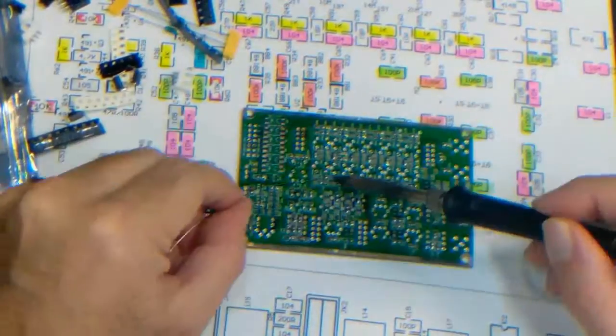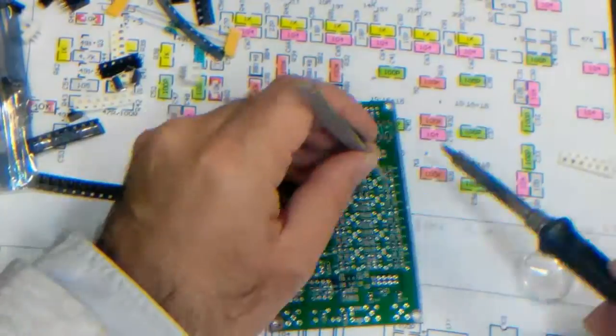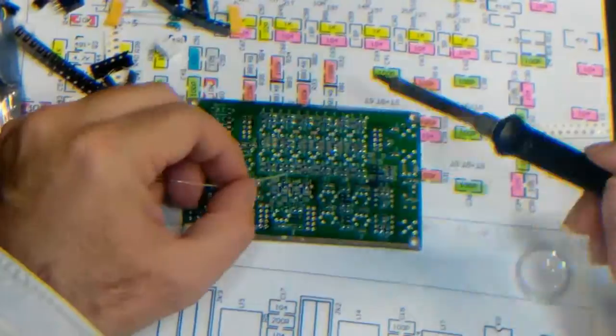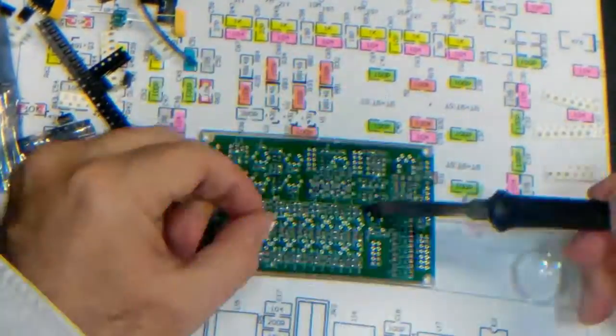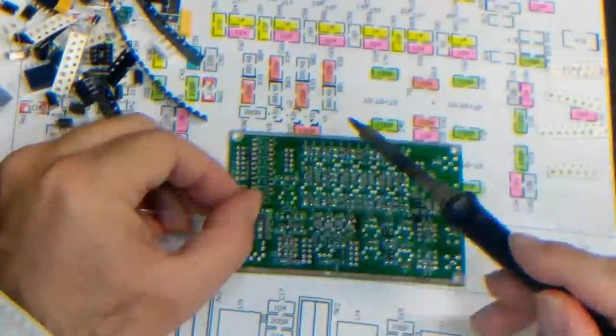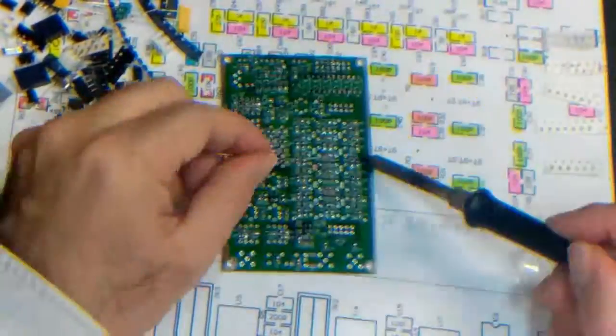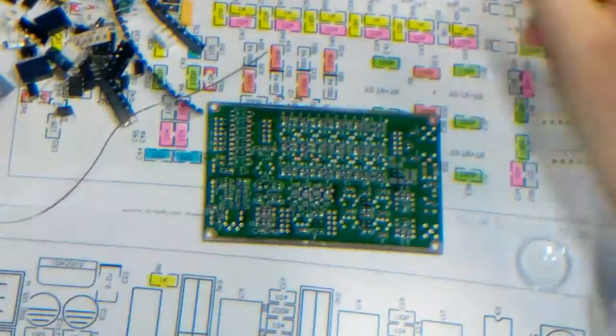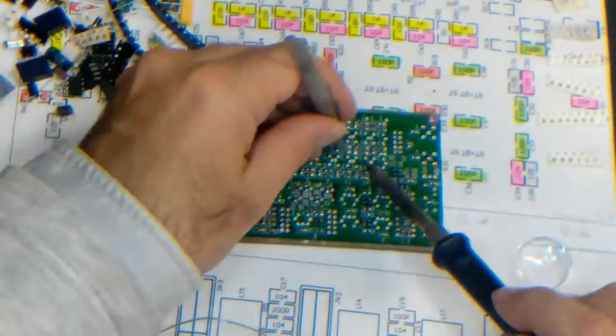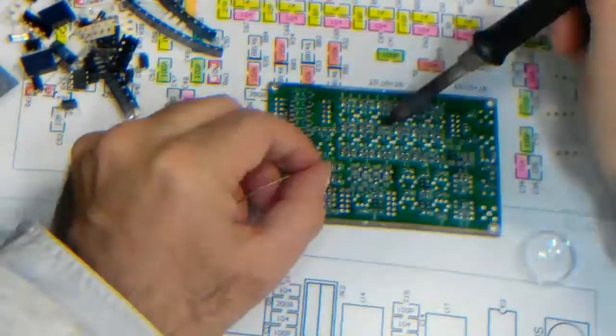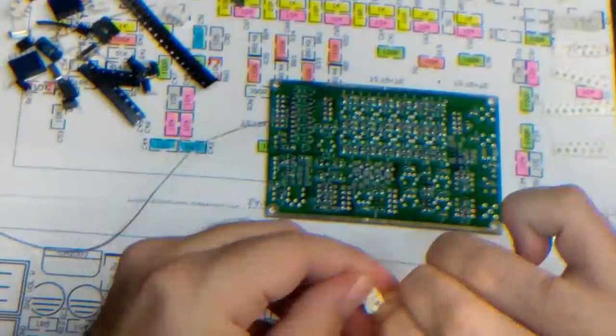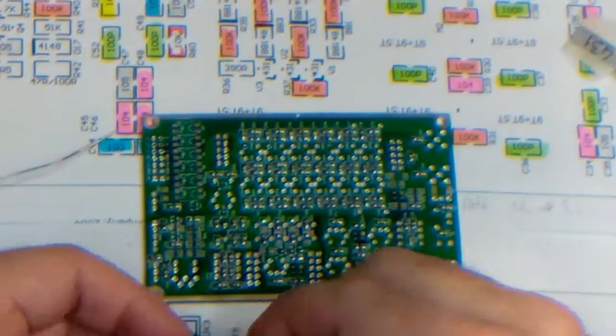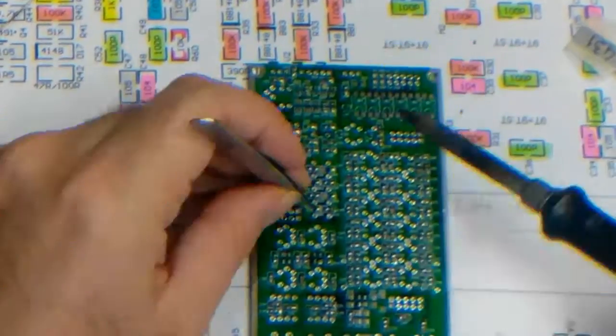The seller has written the values of the capacitors on the piece of roll. Be careful with the polarity of the diodes, capacitors, zeners, transistors, and MOSFETs.